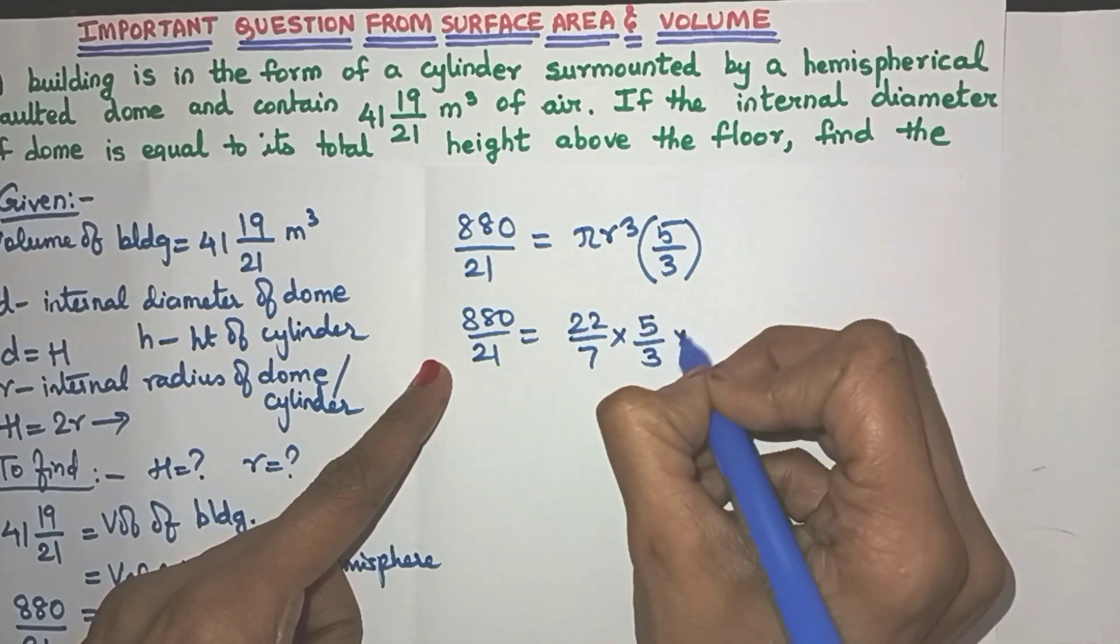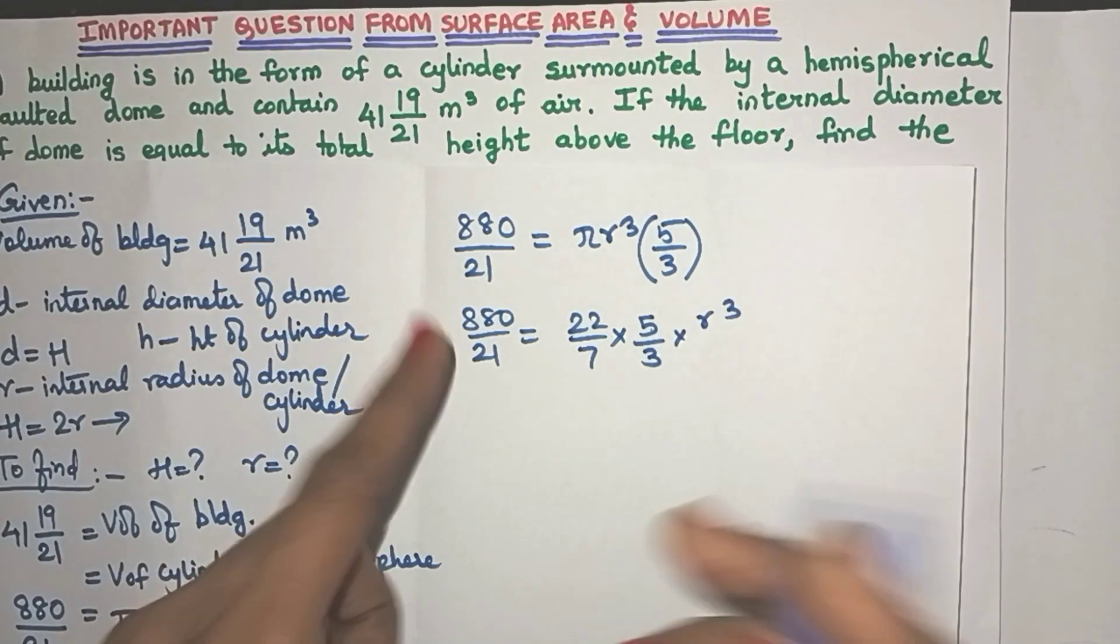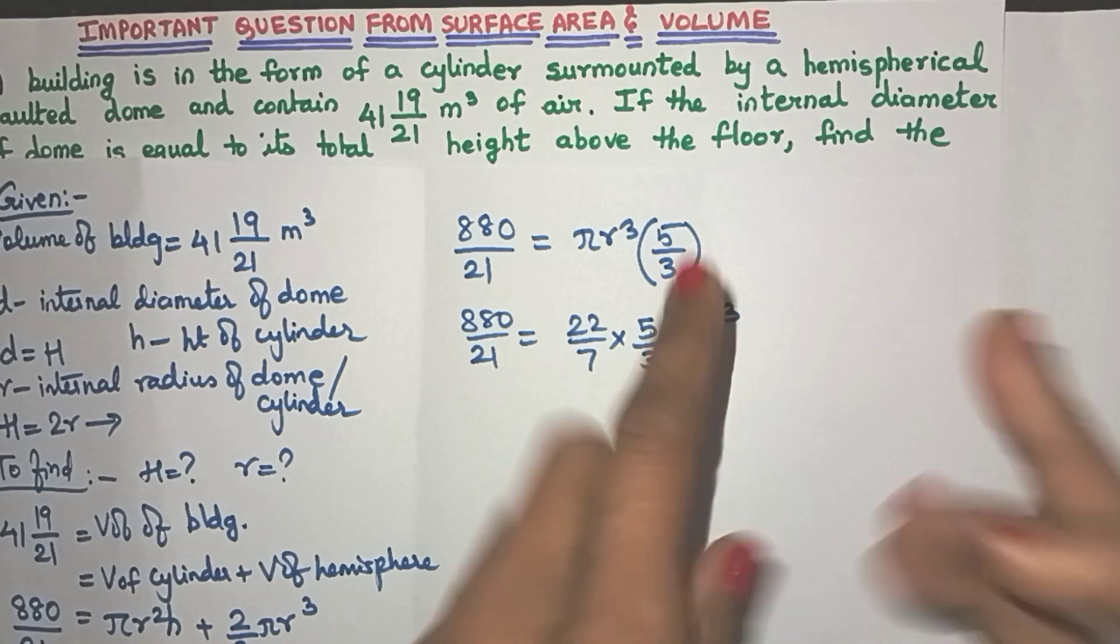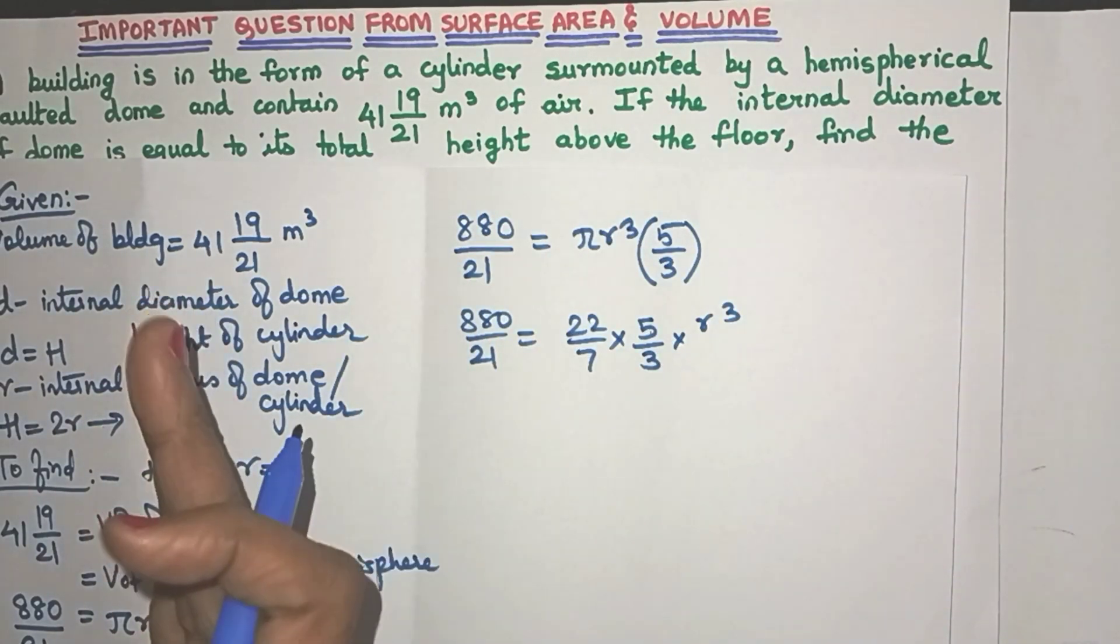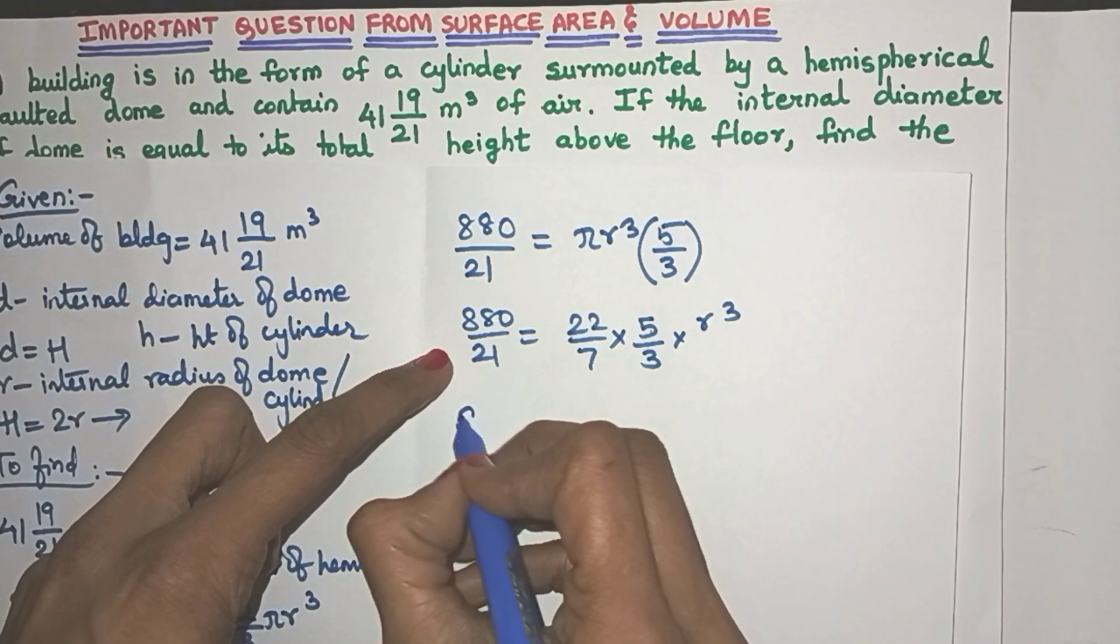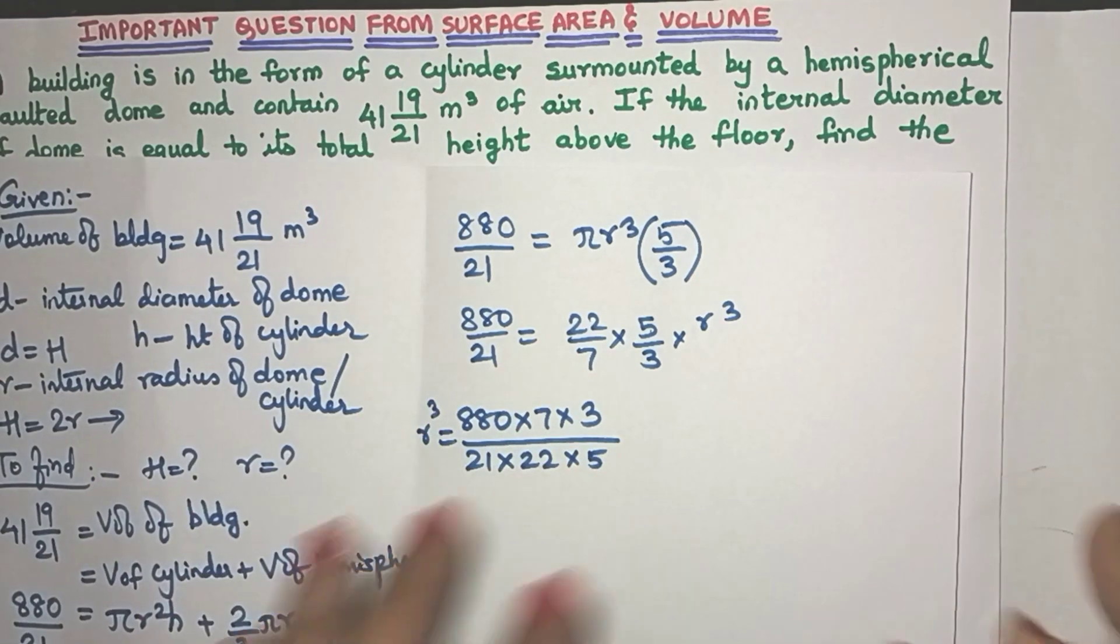I don't think any other simplification is possible. So we need to find the value of R. So let us keep R in one side and bring all the other numbers to the other side. So what will we get? So let me write it this way. Now friends, instead of multiplying everything directly,